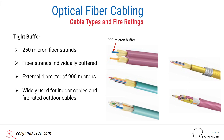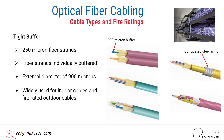As with loose tube cables, additional physical protection for both indoor and outdoor tight buffer cables can be provided by a layer of corrugated steel armor between two layers of jacketing. Armored indoor cables are ideal for use in shared cable trays, where they may end up beneath other heavy cable bundles. In such cases, the armoring prevents excessive signal loss due to the higher crushing forces along the length of the fiber cables.